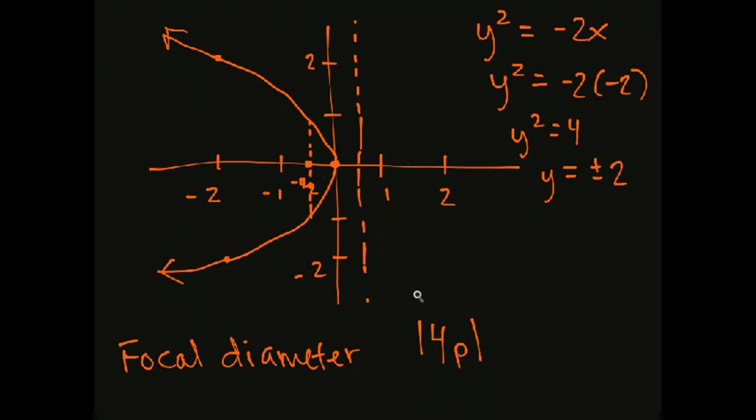So let's take a look at what's going on here. So we're looking at, if we're at the graph y squared equals 4px, we're looking at the point x equals p. At x equals p, how wide is the graph?